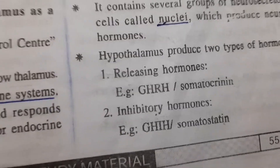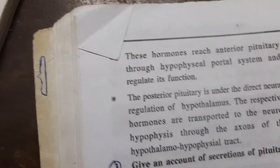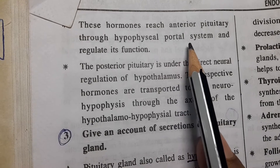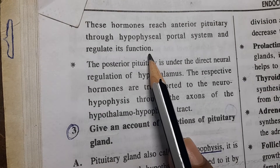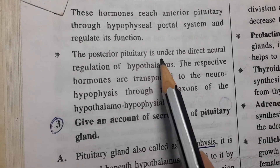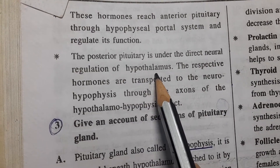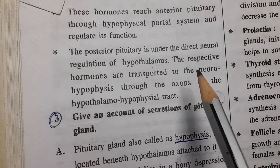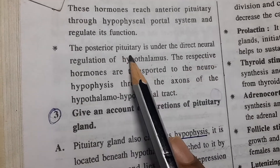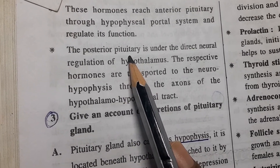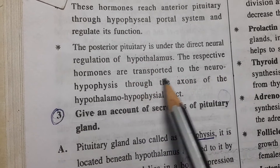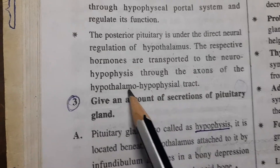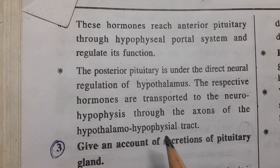Somatostatin is an inhibitory hormone; somatocrinine is a releasing hormone. Another hormone, somatotrophin, is released by the pituitary gland. These hormones reach the anterior pituitary through the hypothalamo-hypophysial portal system and regulate the function of the anterior pituitary. The posterior pituitary is under direct neural regulation of the hypothalamus; oxytocin and ADH (antidiuretic hormone) are transported to the neurohypophysis through the axons of the hypothalamo-hypophysial tract.